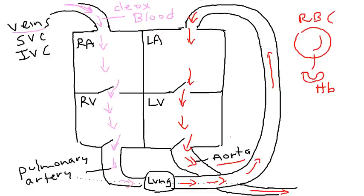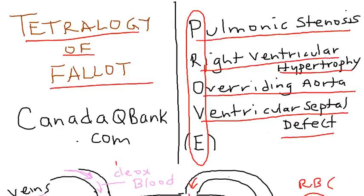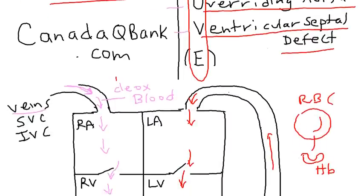Now we have a presentation about Tetralogy of Fallot. Do these four things all happen at the same time by some miracle? The answer is no. Tetralogy of Fallot is really just one problem — one problem that causes these four things. What is that one problem?